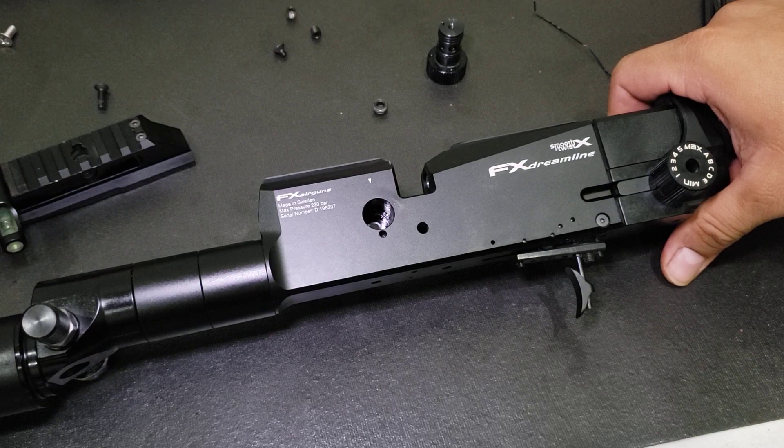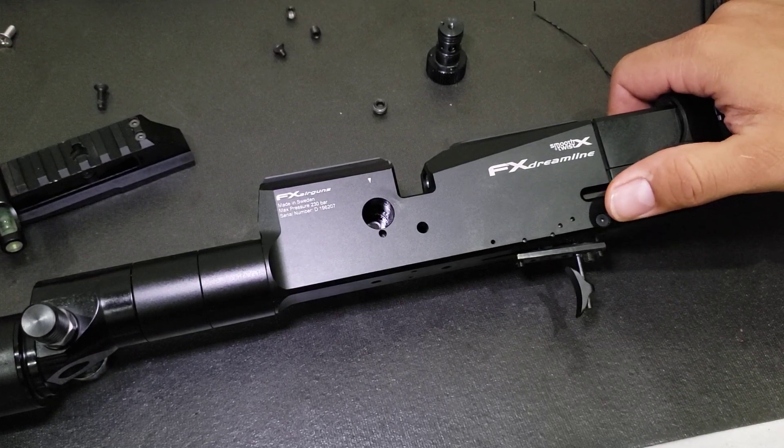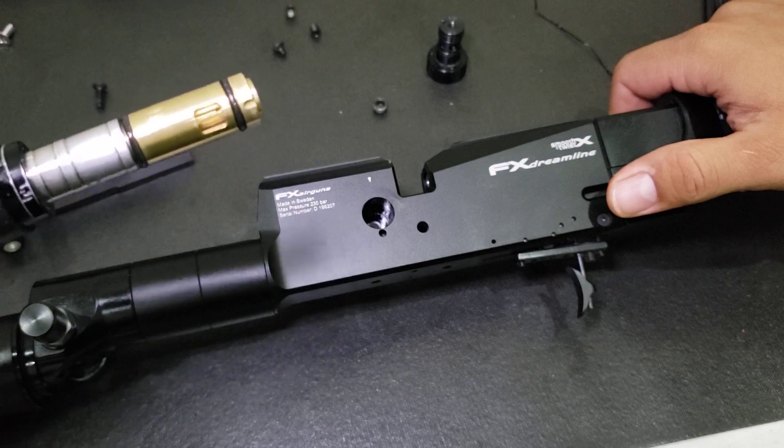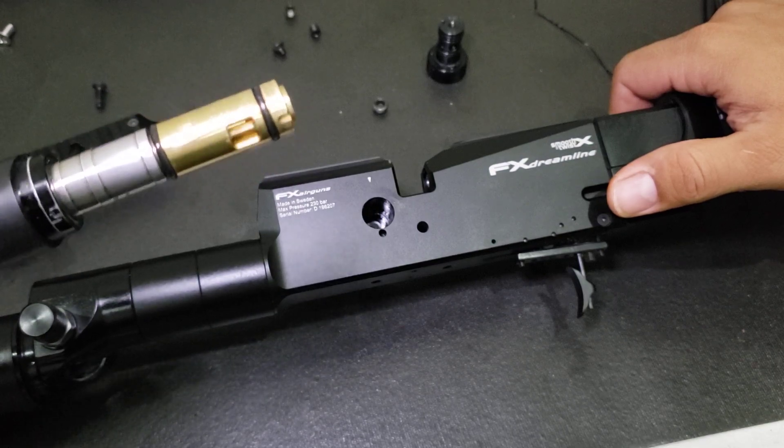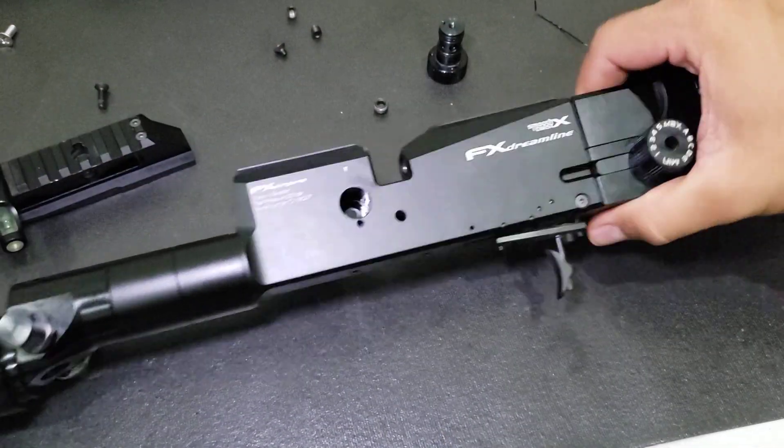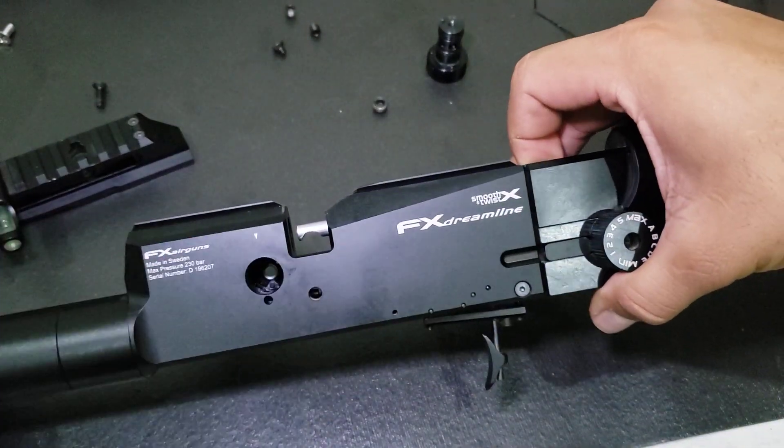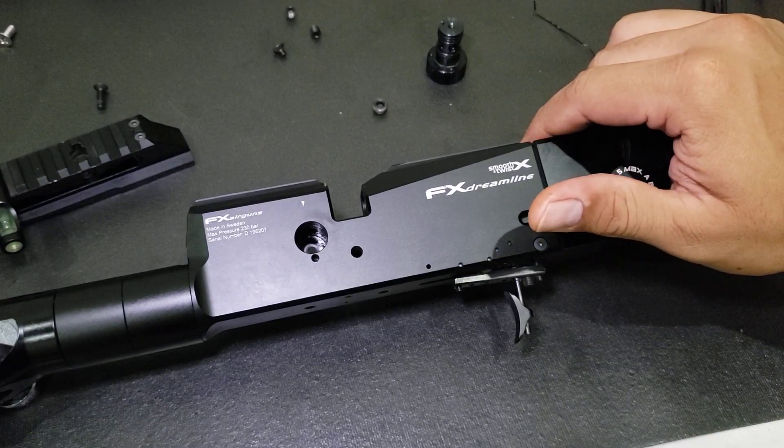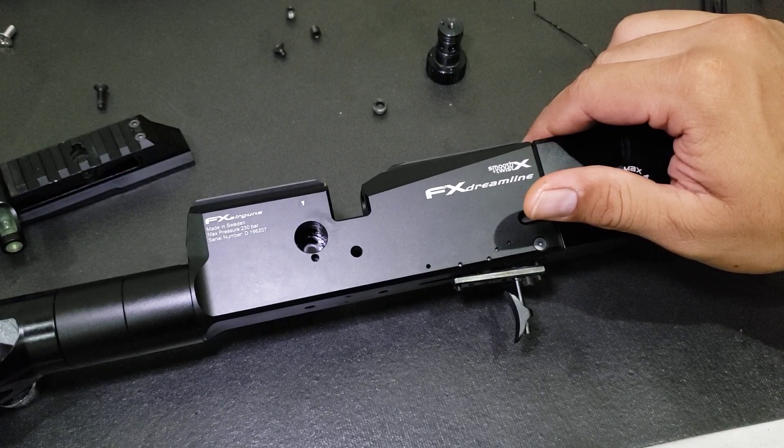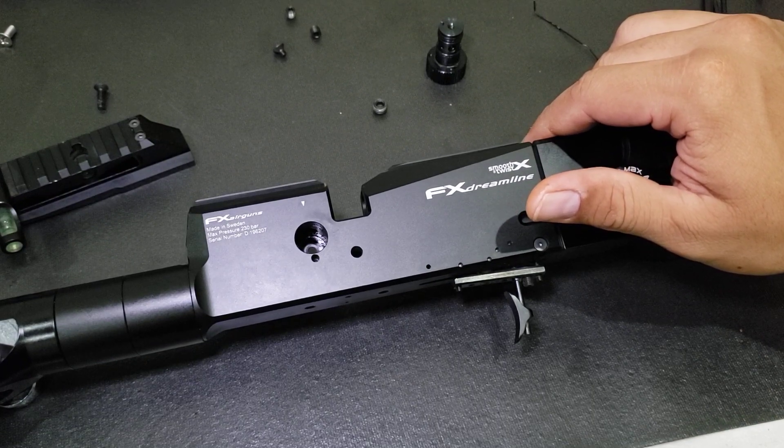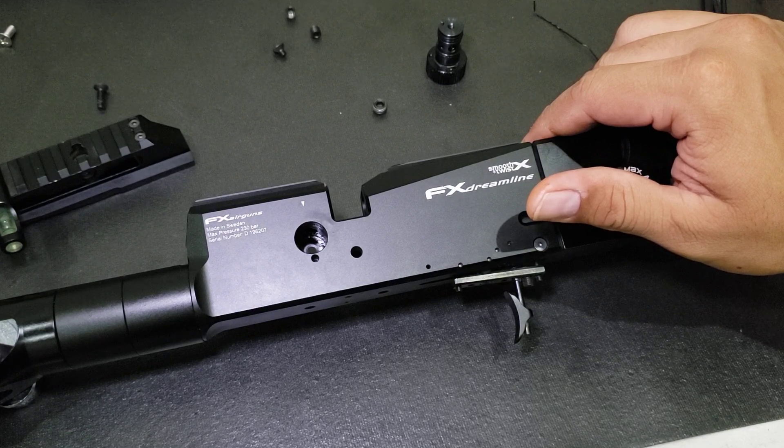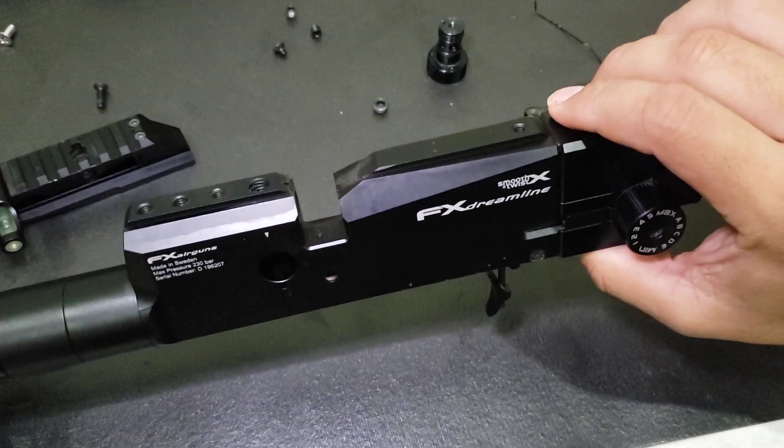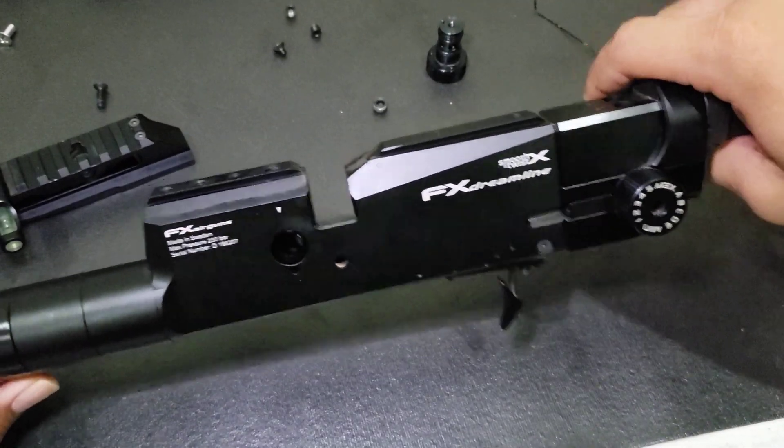In other words, I need more airflow. So what can we do? I already changed my transfer port with a double hole transfer port for more airflow. This is by Huma. I also elongated my pellet probe, made it bigger. So I didn't notice too much velocity increase, so I think I need more airflow.